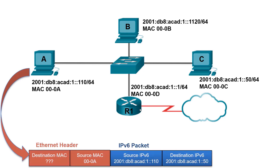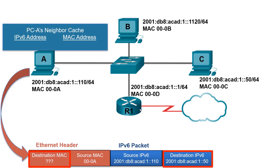Host A has a packet to send to Host C. Host A has determined that the destination IPv6 address is on the same network as Host A. Host A knows the destination IPv6 address, but needs the associated destination MAC address so it can encapsulate the IPv6 packet in an Ethernet frame to send directly to Host C. Host A examines its Neighbor Cache to see if there is an entry for this destination IPv6 address. Similar to an ARP table, the Neighbor Cache maps IPv6 addresses to MAC addresses.